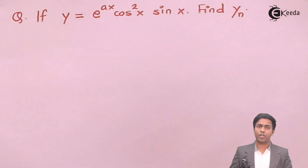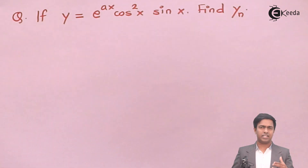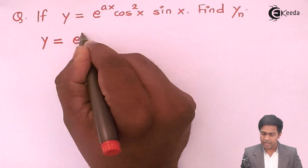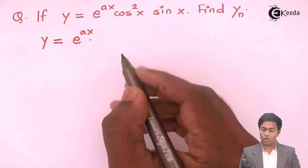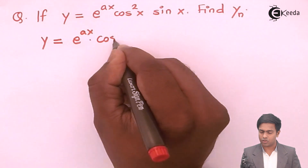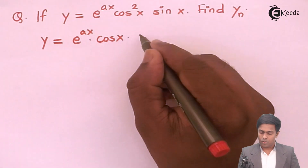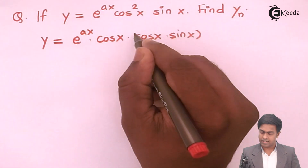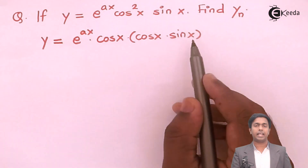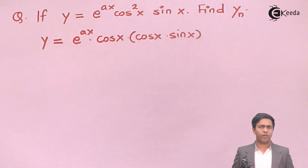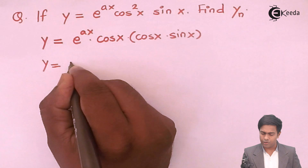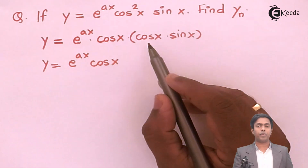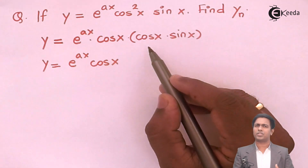To convert the function, we use defactorization. We write y = e^(ax) · cos x · cos x · sin x. For cos x · sin x we apply the product-to-sum formula 2cosA sinB. This cos x will remain as it is, and the formula is applied to the remaining cos x · sin x.